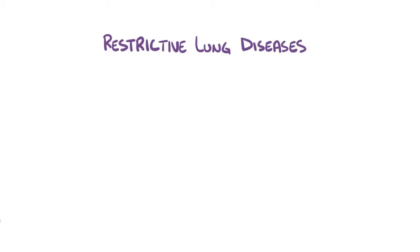Restrictive lung diseases are just as they sound — restrictive. There are two types of restrictive lung diseases: interstitial and extra-pulmonary.